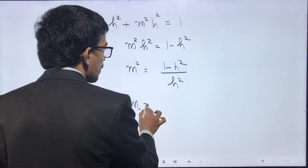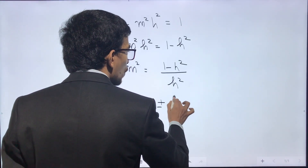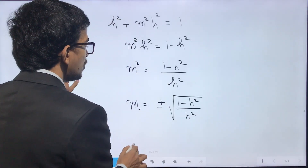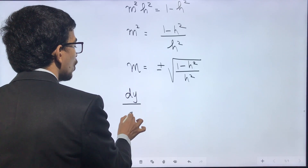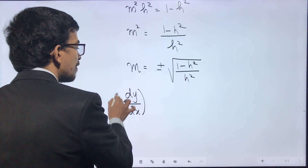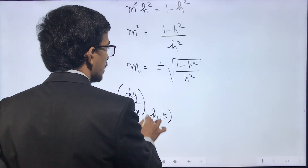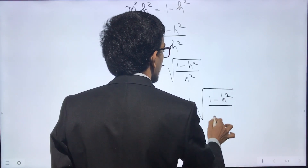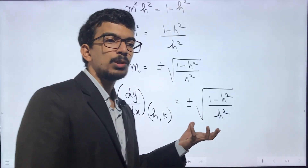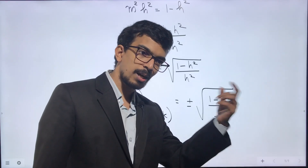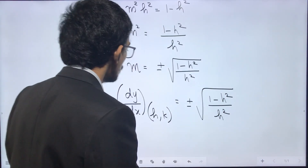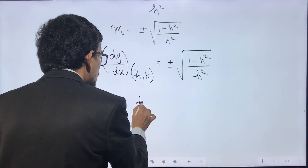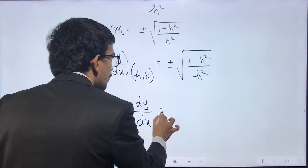From m²h² = 1 − h², we get m² = (1 − h²)/h², so m = ±√((1 − h²)/h²). This m is nothing but dy/dx evaluated at (h, k). Now we get rid of (h, k) and return to usual notation: dy/dx = ±√((1 − x²)/x²).